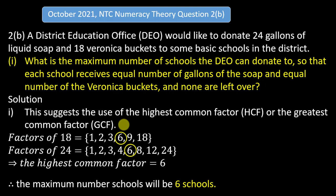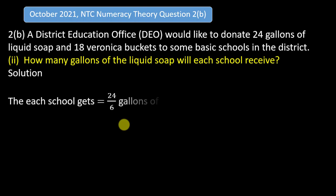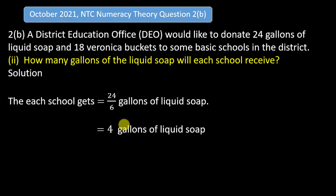We can therefore conclude the maximum number of schools will be 6 schools. Now for the second part — how many gallons of liquid soup will each school receive? Since we know there are 6 schools, we simply divide the total gallons of liquid soup by 6. Each school gets 24 ÷ 6 = 4 gallons of liquid soup.